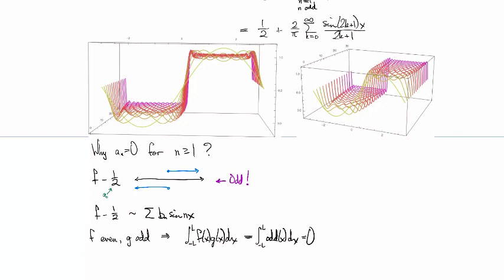This tells us, because we can interpret this as being the inner product between f and g, that odd functions are always orthogonal to even functions. So in particular, the coefficients for the sines are all going to be zero if your function's even, and the coefficient for the cosine terms are all going to be zero if your function is an odd function.